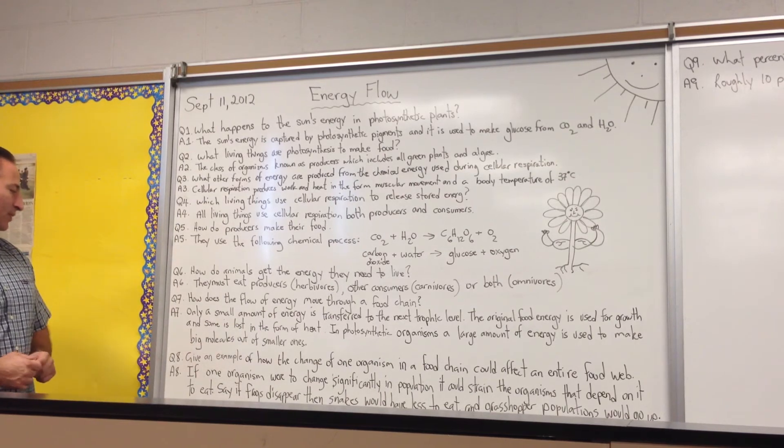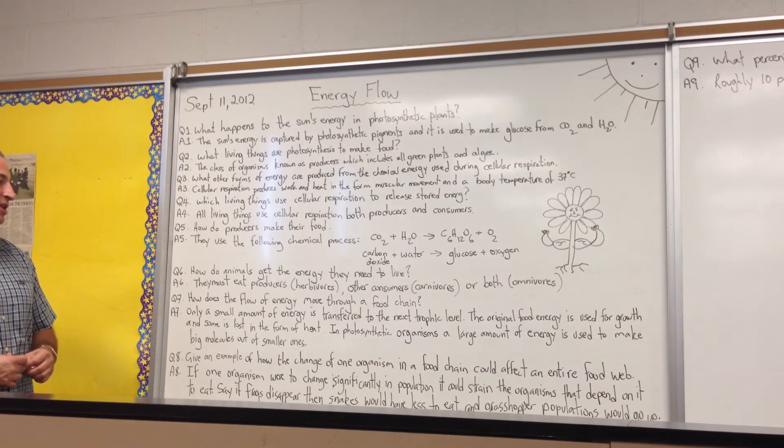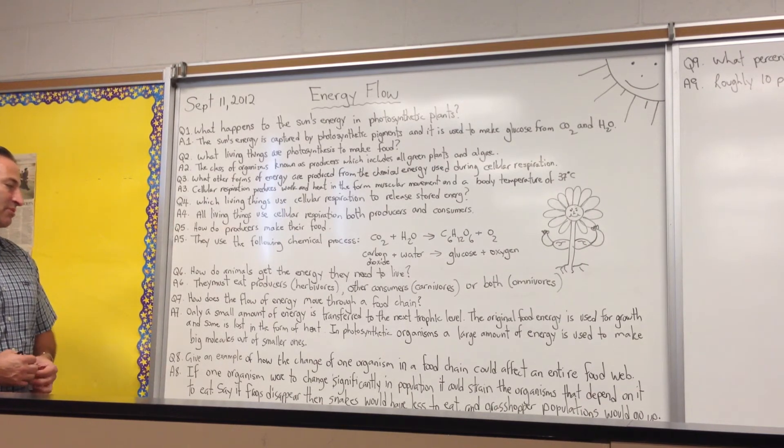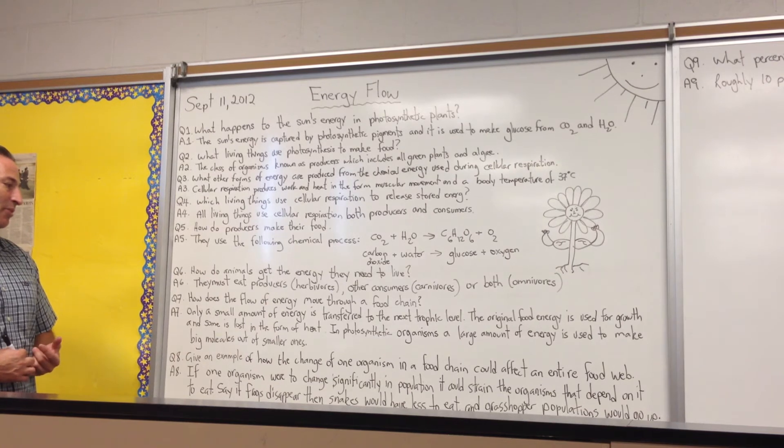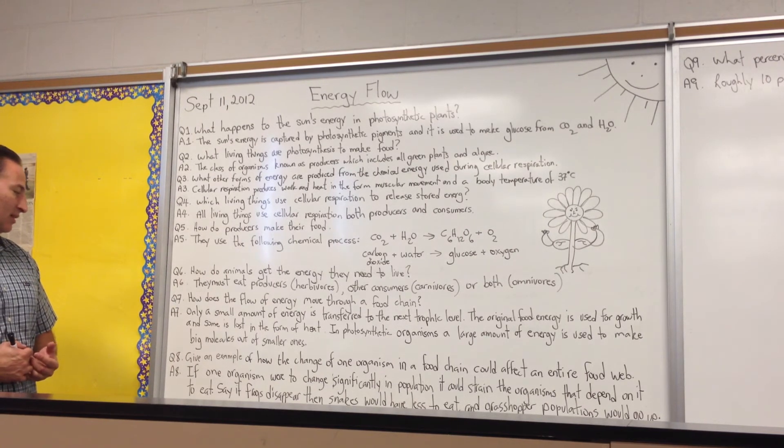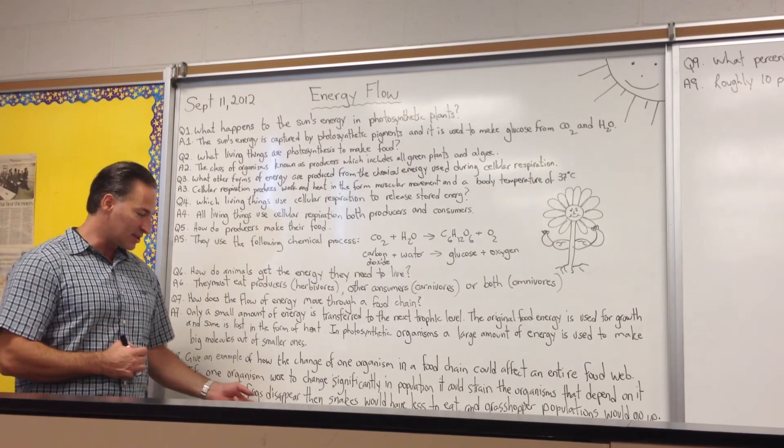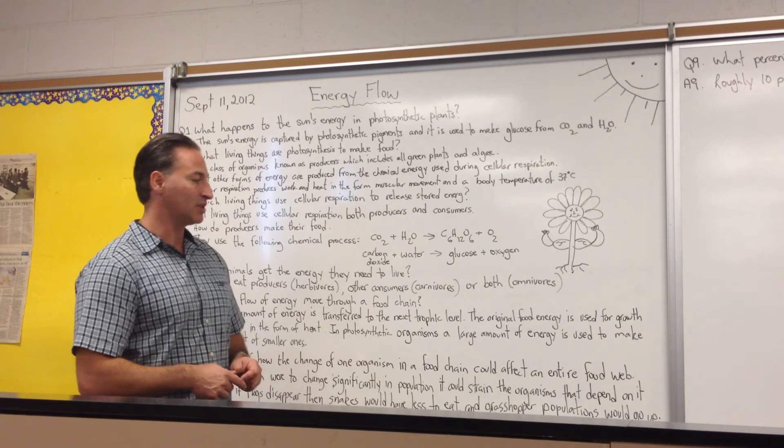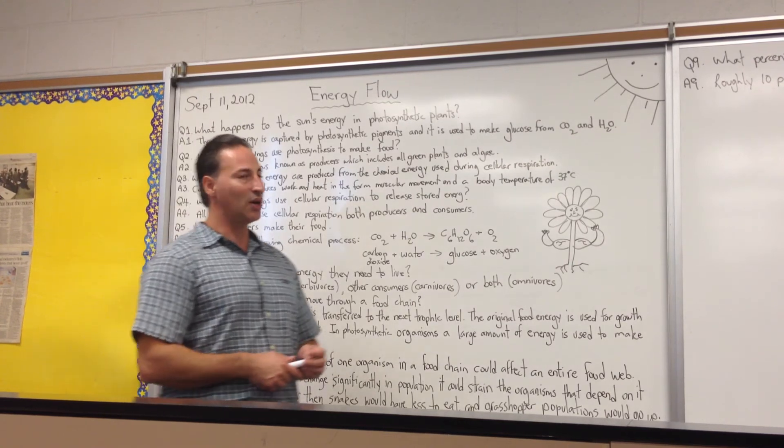The eighth question, give an example of how the change of one organism in a food chain could affect an entire food web. And the answer is, if one organism were to change significantly in a population, it could strain the other organisms that depend on it to eat. So say, for example, if frogs disappear, then the snakes would have less to eat, and grasshopper populations would tend to increase.